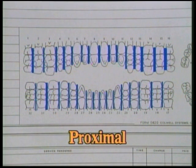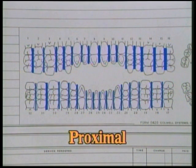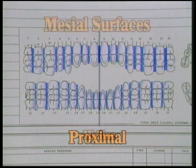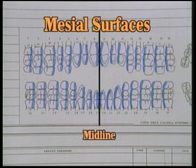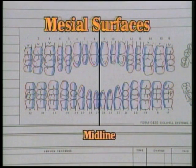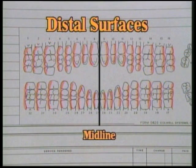Remember that the proximal surfaces are the surfaces of the teeth that touch the adjacent or next teeth. The mesial is the proximal surface closest to the midline or the middle of the body. The distal is the proximal surface furthest from the midline.